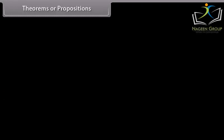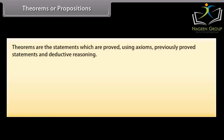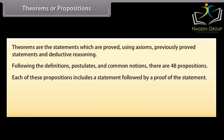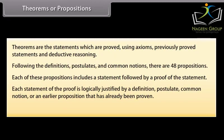Theorems or propositions. Theorems are the statements which are proved using axioms, previously proved statements, and deductive reasoning. Following the definitions, postulates, and common notions, there are 48 propositions. Each of these propositions includes a statement followed by a proof of the statement. Each statement of the proof is logically justified by a definition, postulate, common notion, or an earlier proposition that has already been proven. Some of the propositions are constructions.